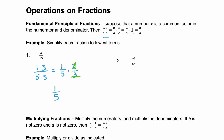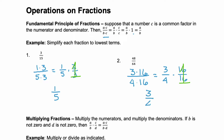Look at example 2. The numbers are a little bit larger, but we know 48 is 3 times 16, and 64 is 4 times 16. Again, we can rewrite this as 3 fourths times 16 over 16. And because the numerator is 16 and the denominator is 16, this is equivalent to 1. And this simplifies to 3 fourths.